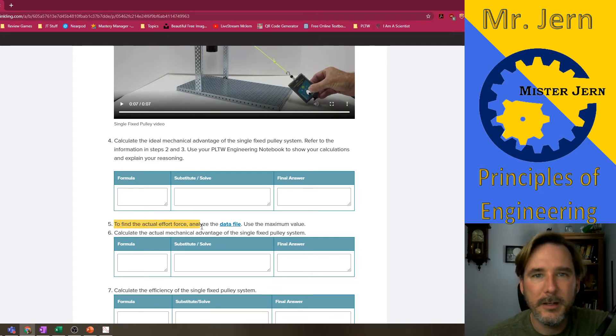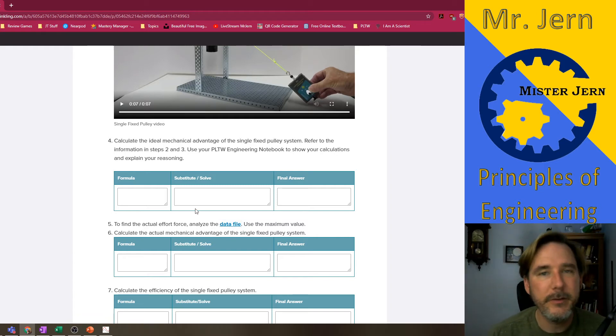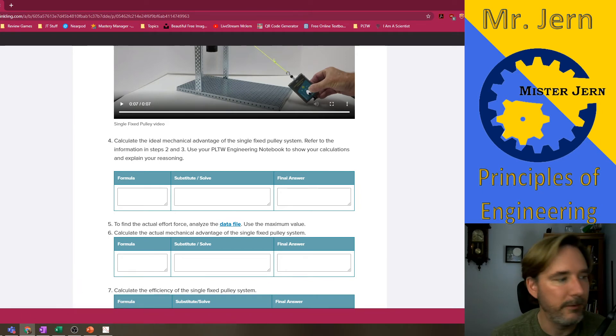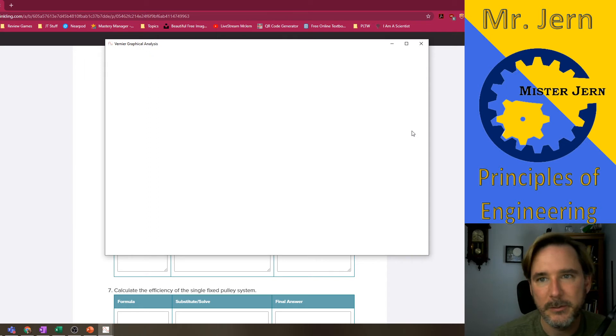Now we're going to calculate the ideal mechanical advantage. I don't like how this question is worded because if you look at the notes, what's the ideal mechanical advantage of a simple pulley? There's no calculations involved. I don't necessarily need you to go through all this, but you should explain your reasoning. By explain your reasoning, just state it like this is what it is. Give me a reason, that's just what it is. Maybe give me the reason it's given in the notes. Now here's the thing: we're going to have to do something different. You're going to find the actual effort force by analyzing actual data. We're going to use the maximum value. This is going to be a crash course in Vernier graphical analysis.